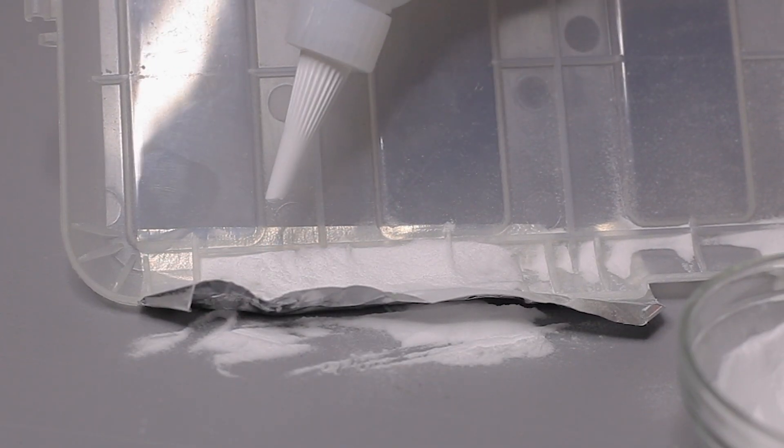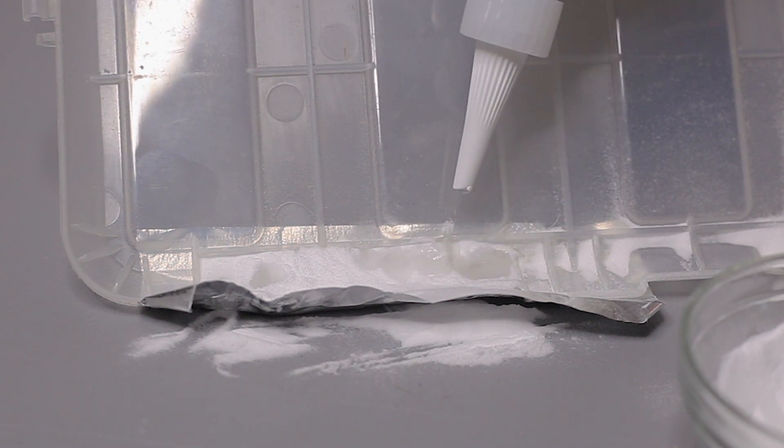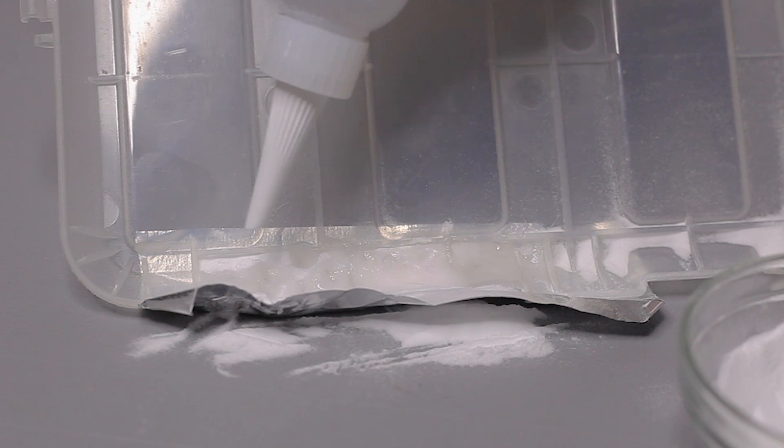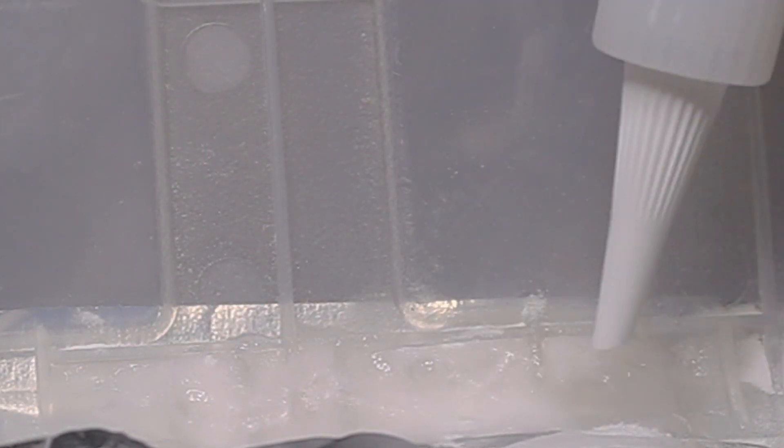But trying that again with some Starbond liquid CA glue, you can see that it's liquid enough to seep into and dissolve the baking soda before it begins to cure. And if you look closely, you can actually see vapors coming off the mixture as it gets incredibly hot when this chemical reaction takes place.